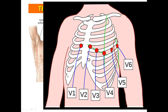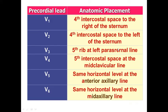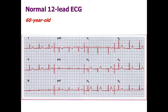V5 electrode we place on the fifth intercostal space along the anterior axillary line. V6 is placed on the fifth intercostal space at the mid-axillary line. To summarize: V1 — fourth intercostal space, right side of sternum; V2 — fourth intercostal space, left side of sternum; V3 — between V2 and V4 on the fifth rib, left para-sternal line; V4 — fifth intercostal space, mid-clavicular line; V5 — fifth intercostal space, anterior axillary line; V6 — fifth intercostal space, mid-axillary line. Here is a real patient ECG.